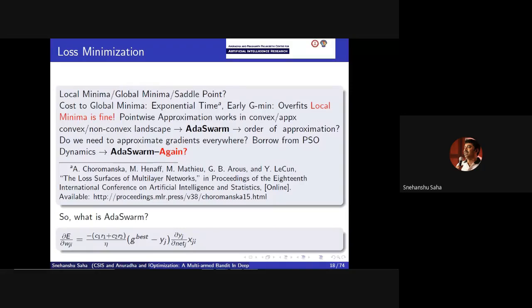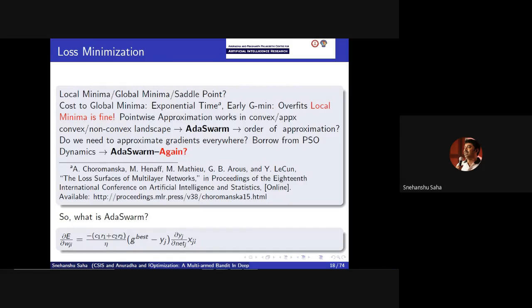This is the equivalence relation we typically use in neural network training, where we can see that the error gradient - which is what you are supposed to compute because you have to eventually update the weights - can be approximately represented using the parameters of the swarm. All we require for this kind of approximation to work is that the activation function you choose needs to be differentiable. That's all.